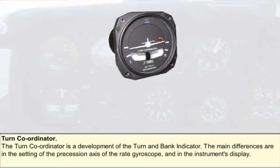The pilot then controls the turn at the required rate by alignment of the aircraft with the graduations on the instrument dial. The rate of turn will depend on the instrument in use — either as a rate one turn of three degrees per second, or any other rates dependent on instrument design. To achieve a balanced rate of turn, the ball still has to remain central.